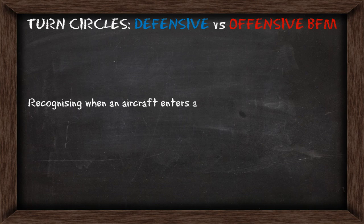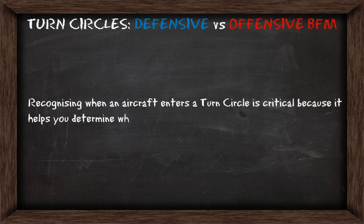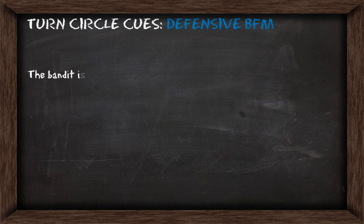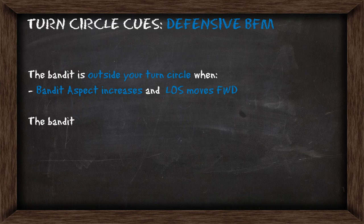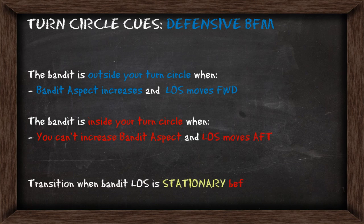Recognizing when an aircraft enters the turn circle is critical, because it helps you determine what BFM will work in a given situation. If you're in a defensive turn, the bandit is outside your turn circle when his aspect increases and line of sight moves forward. If he's inside your turn circle, you can't increase the aspect anymore and line of sight begins moving aft. The transition occurs when the bandit's line of sight is stationary before it begins moving aft on your canopy.